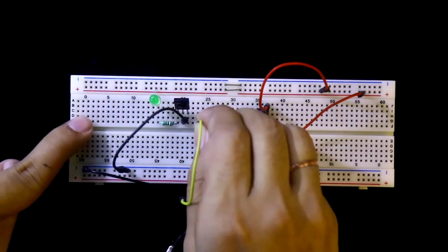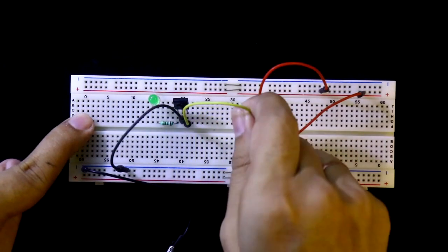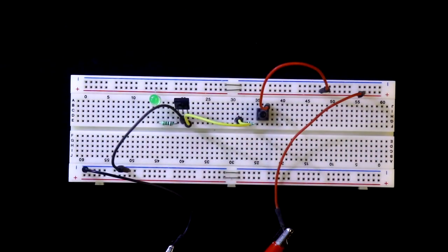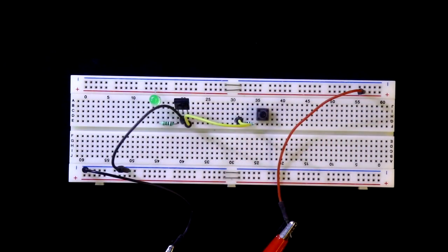So base is connected with the 10K ohms resistor, and this switch is connected to the ground.